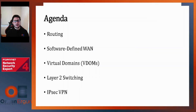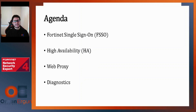This will be the agenda. It's composed of nine modules that begin with routing, then we move forward with software-defined WAN SD-WAN, virtual domains VDOMs, layer 2 switching, IPsec, and in the second half, we end with Fortinet single sign-on, high availability, web proxy, and diagnostics — all of them from both a theoretical and practical point of view.